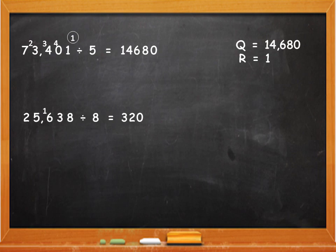8 will go 4 times in 38. So write 4. 8 fours are 32 and 38 minus 32 is 6, which is the final remainder. So the quotient is 3,204 and remainder is 6.